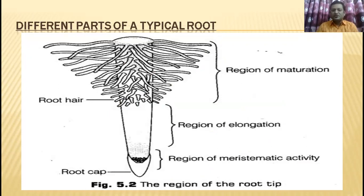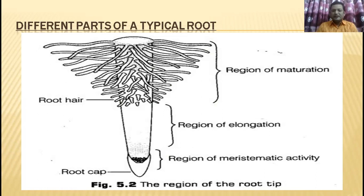The upper portion of the root has hair-like structures called root hairs. That region is called the region of maturation. When the roots become mature, we can see these root hairs. Below the root hairs is the region of elongation — this part elongates and divides as it grows. At the end of the root there is a cap-like structure called the root cap, which is a region of meristematic activity.